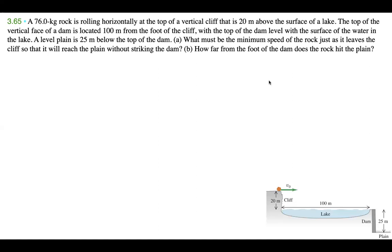A 76.0 kilogram rock is rolling horizontally at the top of a vertical cliff that is 20 meters above the surface of a lake. The top of the vertical face of a dam is located 100 meters from the foot of the cliff, with the top of the dam level with the surface of the water in the lake. A level plane is 25 meters below the top of the dam. Part A: what must be the minimum speed of the rock just as it leaves the cliff so that it will reach the plane without striking the dam? Part B: how far from the foot of the dam does the rock hit the plane?